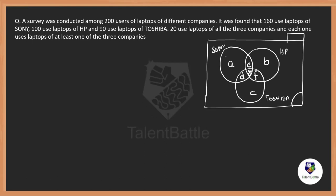Now, 'A' is only Sony — there is a big difference between 'Sony' and 'only Sony'. A represents users who use only Sony. But if I ask how many users are using Sony total, that's A + D + E + G, because D, E, G are also users of Sony. For example, F represents users who use only HP and Toshiba. If I ask how many use Sony and Toshiba, the answer is D + G. If I ask only Sony and Toshiba, the answer is just D.